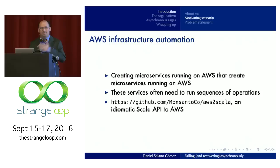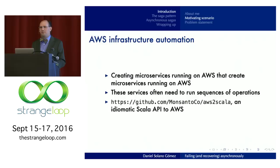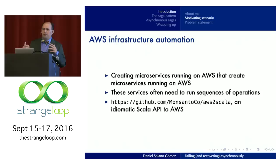This story begins for me at the end of last year. I was doing a contract at Monsanto, and we were creating microservices to help developers create microservices. There's an open source library that we started working on to give you a nice idiomatic Scala API to AWS. So if you're using AWS and using Scala, please check it out. But getting back to microservices — creating microservices — as a result of what we were trying to do, we were interacting with AWS.